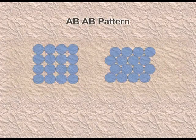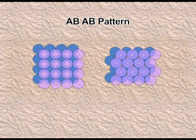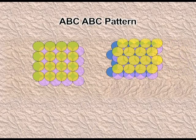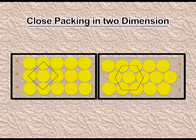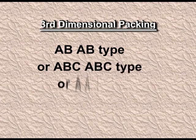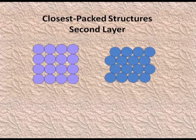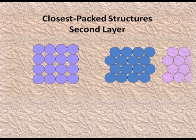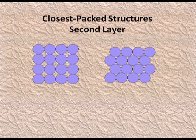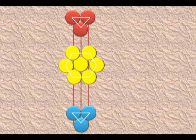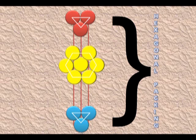So in three-dimensional packing I have three options: AAA type, ABAB type, and ABCABC type. In two dimensions there is square close packing and hexagonal close packing. The ABAB pattern — where the second layer sits in the grooves of the first — corresponds to hexagonal close packing, as clearly visible in the pictures.